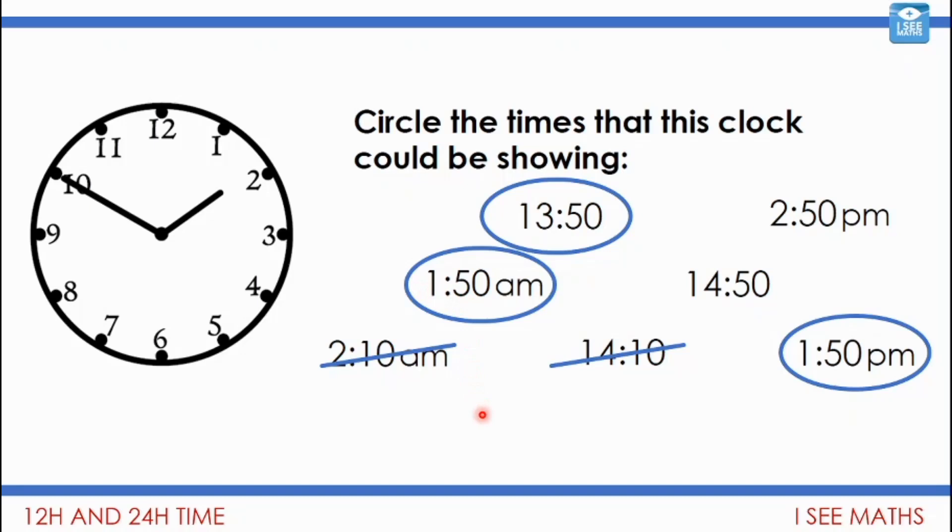Here's your final challenge. What time could this be showing? Can you give it in a.m. and p.m. times, and can you give it in 24-hour clock times? Can you find the four possible times that this could be, or the two possible times shown on those different forms of clock? Pause the video and see how many of those you can find.